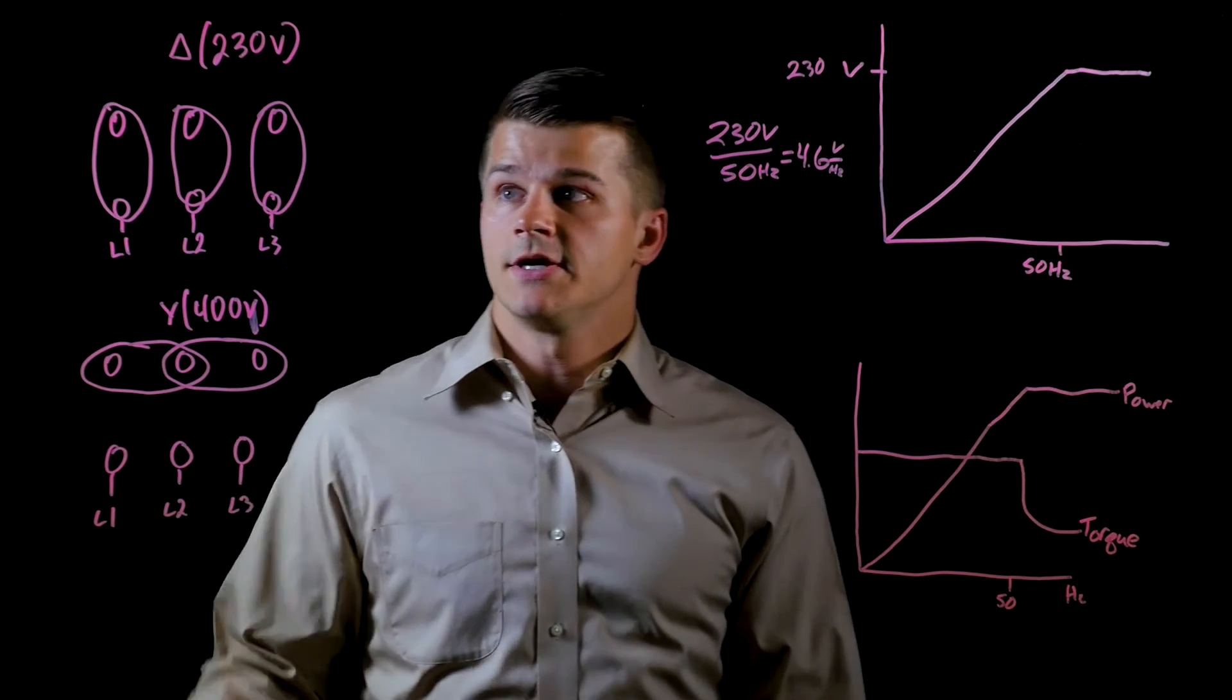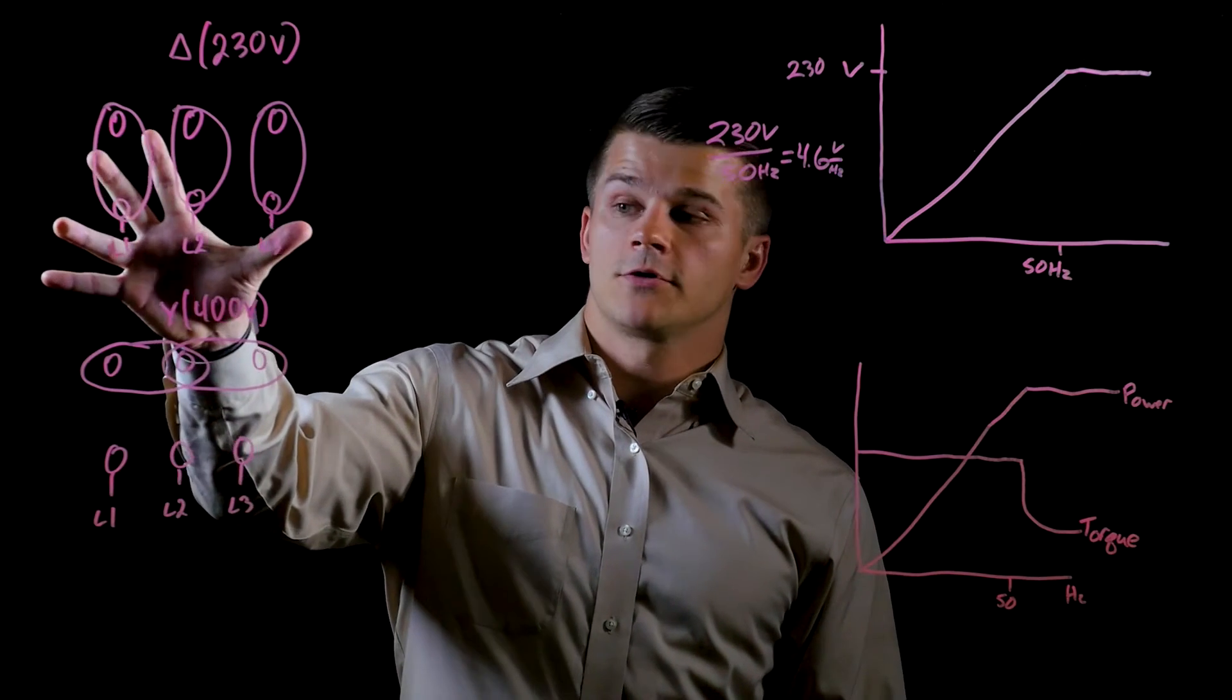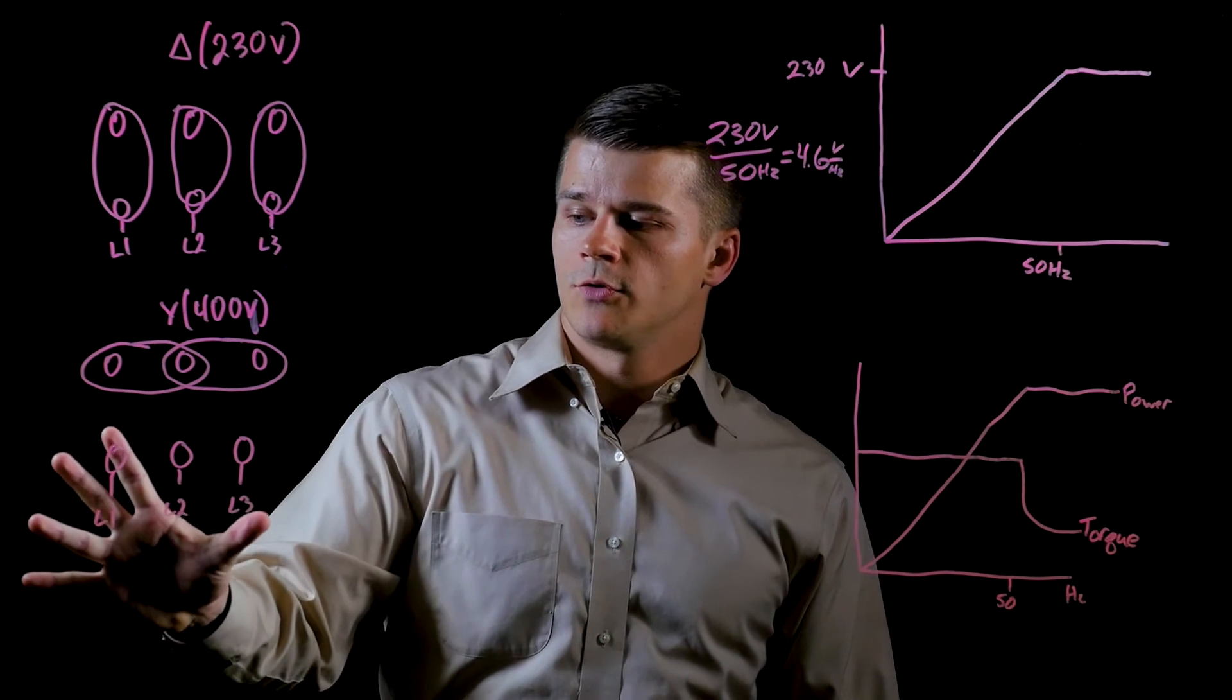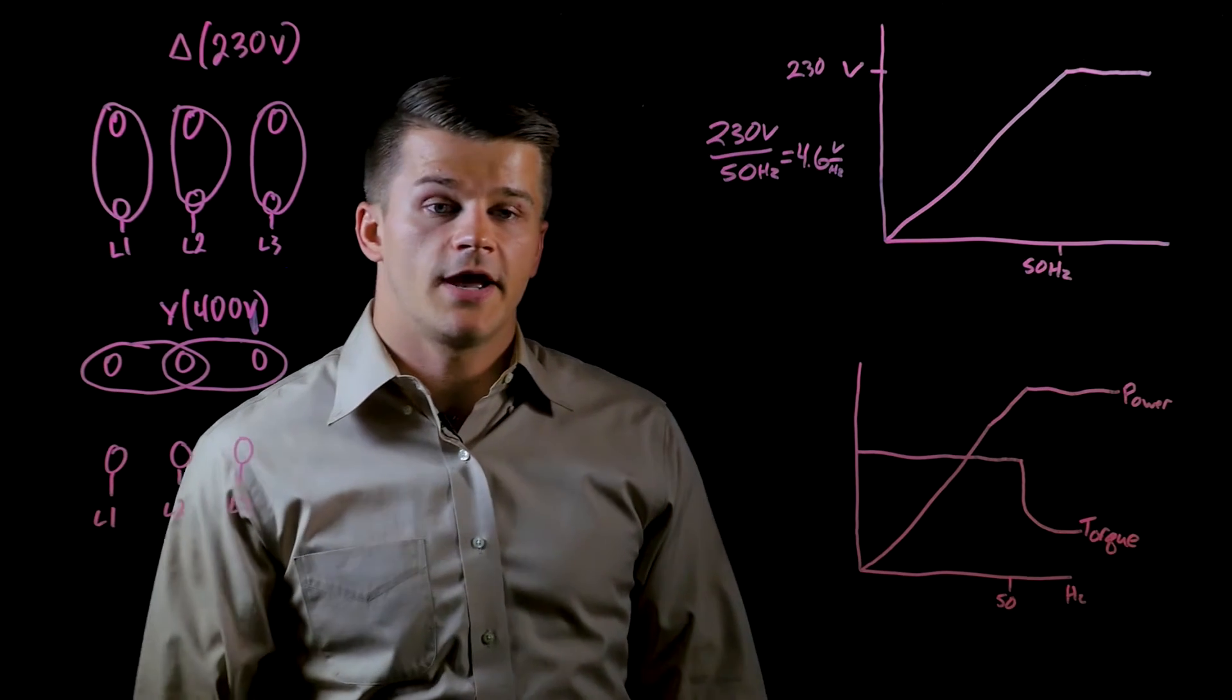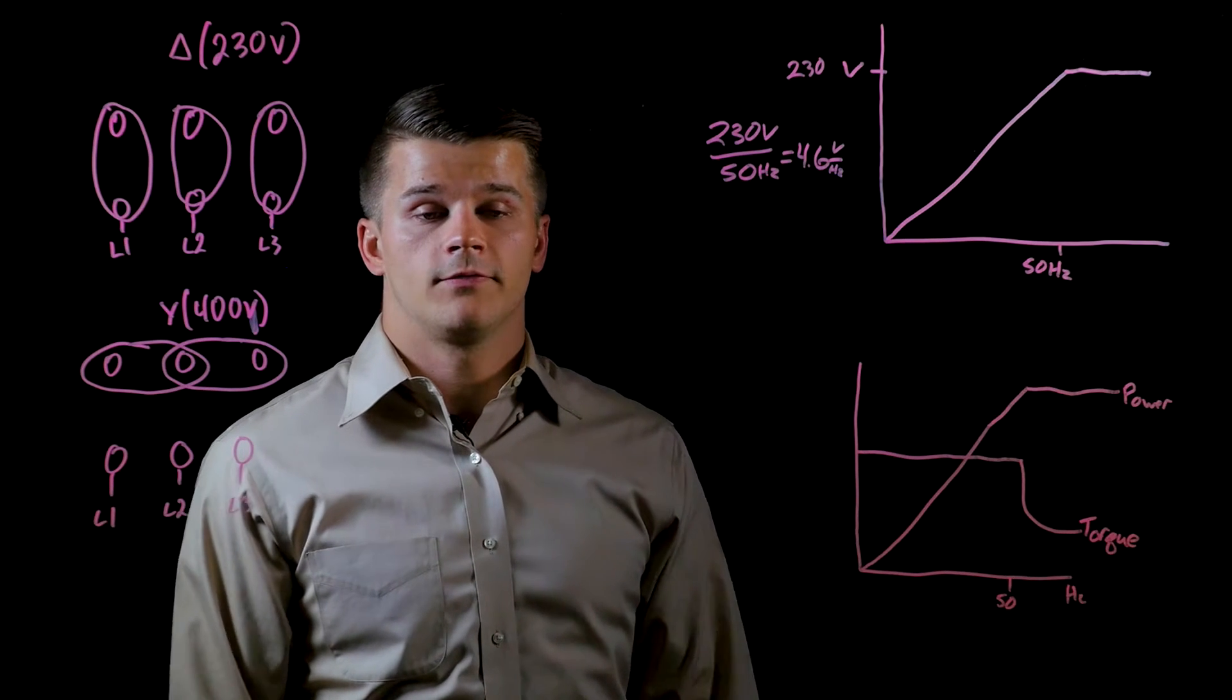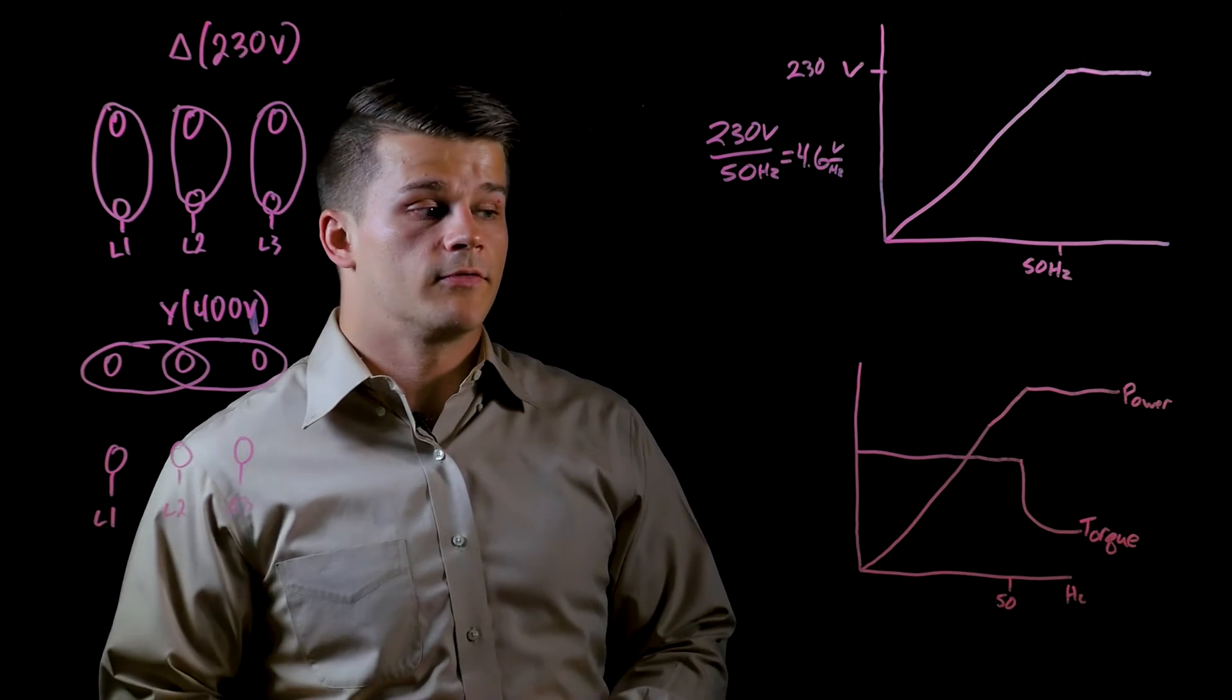What that does is rather than wire it for your 230 volt Delta configuration, you would wire it for the 400 volt Y configuration. The one thing to keep in mind is you would have to have a 400 volt drive in front of it that allows for a 400 volt input to the drive.